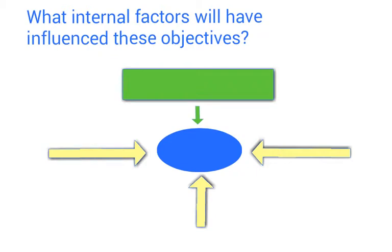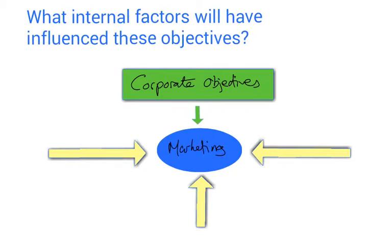Thinking about the internal operations of Tesco, what actually influences what Tesco chooses as its marketing objectives? One really important thing to consider is corporate objectives — the objectives for the whole business. Those should feed very much into the marketing objectives. If a business is using its objective structure effectively, the corporate objectives should cascade down into the marketing objectives.